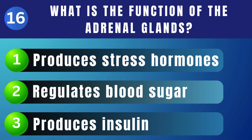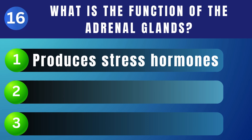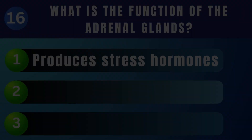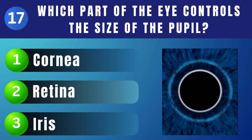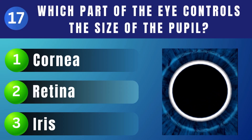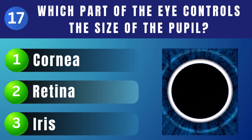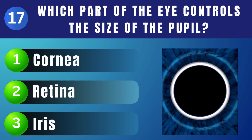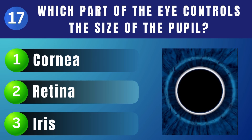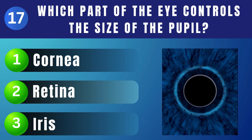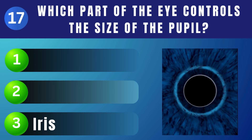What is the function of the adrenal glands? Produces stress hormones. Which part of the eye controls the size of the pupil? Iris.